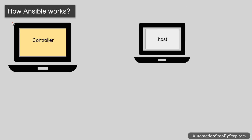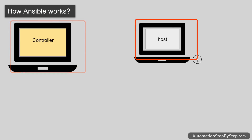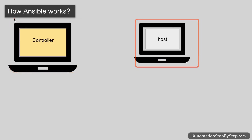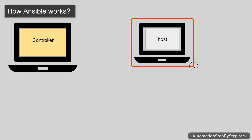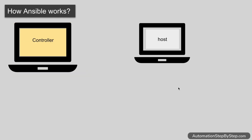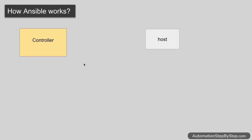In Ansible we have basically two machines or two systems. The first system is called the controller and the second system is called the host. The controller system is where we install Ansible and create the Ansible files, and the host system is the system that will be controlled by the controller. We can have multiple host systems controlled by a single controller.